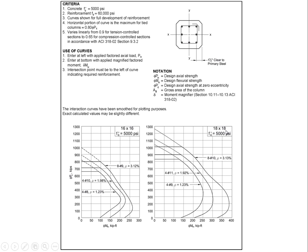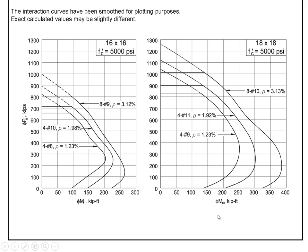This is for an 18 inch by 18 inch column with this pattern of reinforcing, and it's for 5,000 psi concrete, and I'm going to blow this up so we can see it a little bit better. But you'll notice on this axis we're plotting the moment capacity of the column.